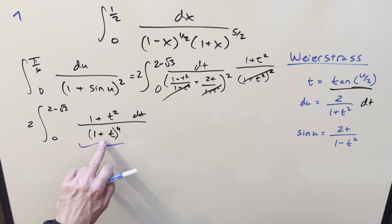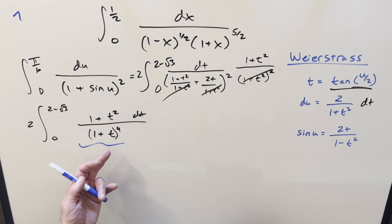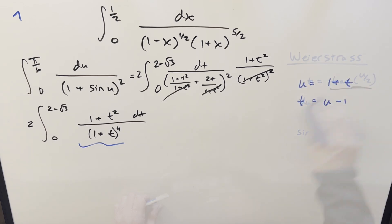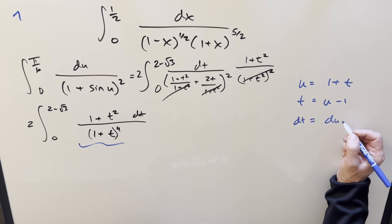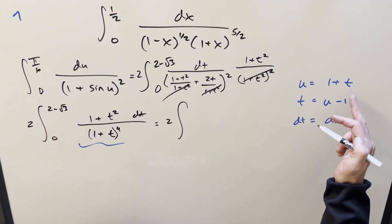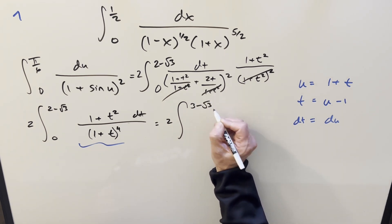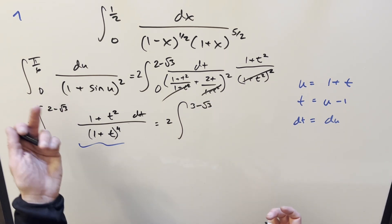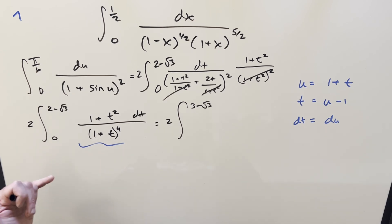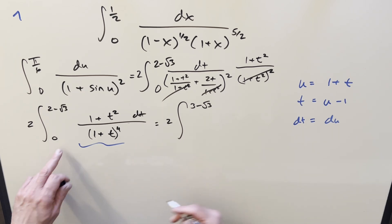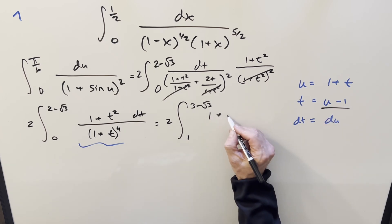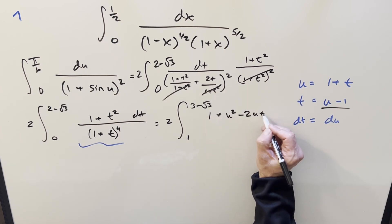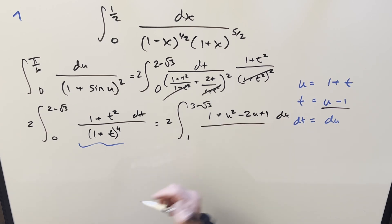Setting up this substitution: dt equals du. Plugging in 2 minus sqrt(3), we end up with 3 minus sqrt(3) for the upper bound. I'm reusing u here but it doesn't matter in a definite integral. Plugging in 0, our lower bound becomes 1. Then we have (1 plus t²) — squaring this gives u² minus 2u plus 1 — over u⁴.